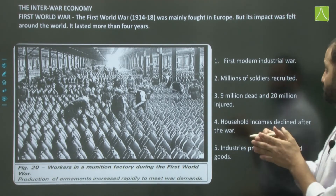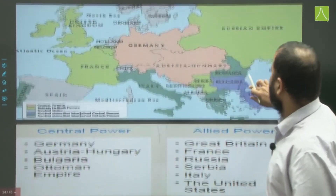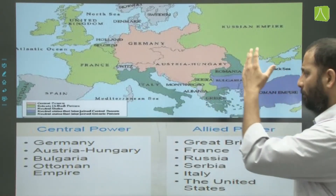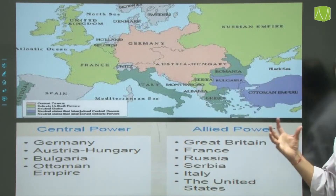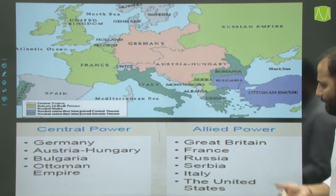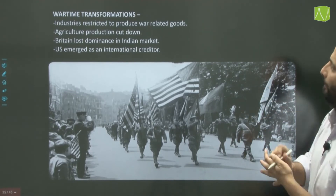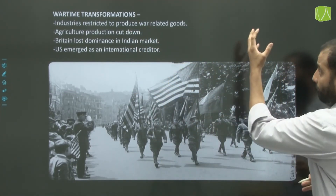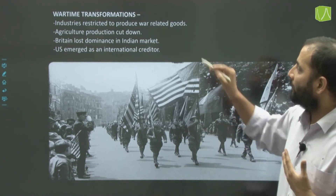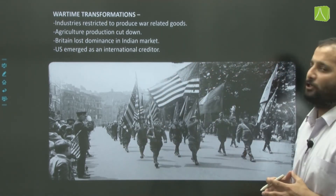Household incomes declined after the war, and industries produced only war-related goods during this period. The central powers were Germany, Austria-Hungary, Bulgaria, and the Ottoman Empire. The allied powers who won were Great Britain, France, Russia — which left in 1917 — Serbia, Italy, and the United States, which later joined. During wartime, industries were restricted to war goods, agriculture production was cut down, Britain lost dominance in the Indian market, and the US emerged as the international creditor.